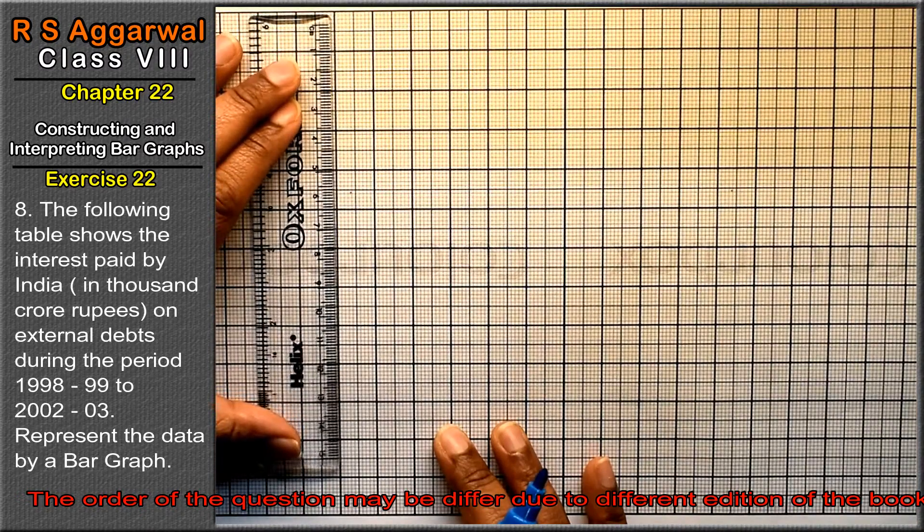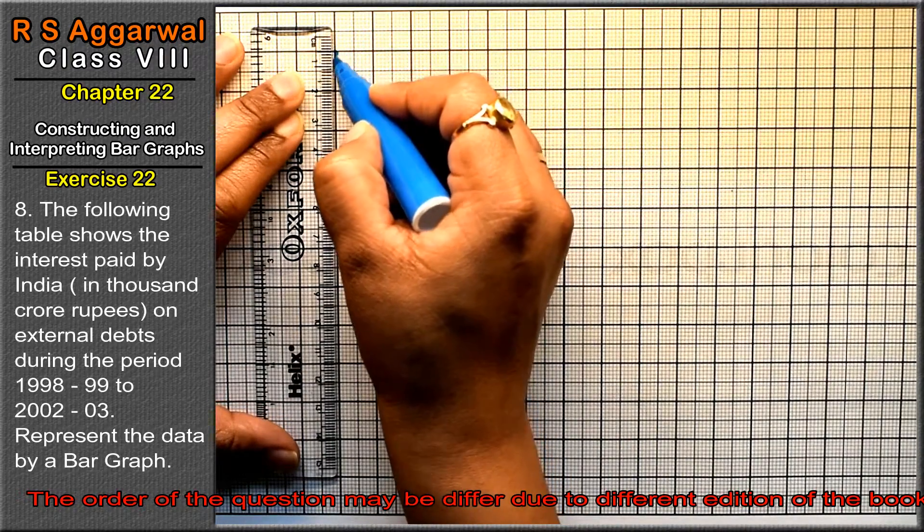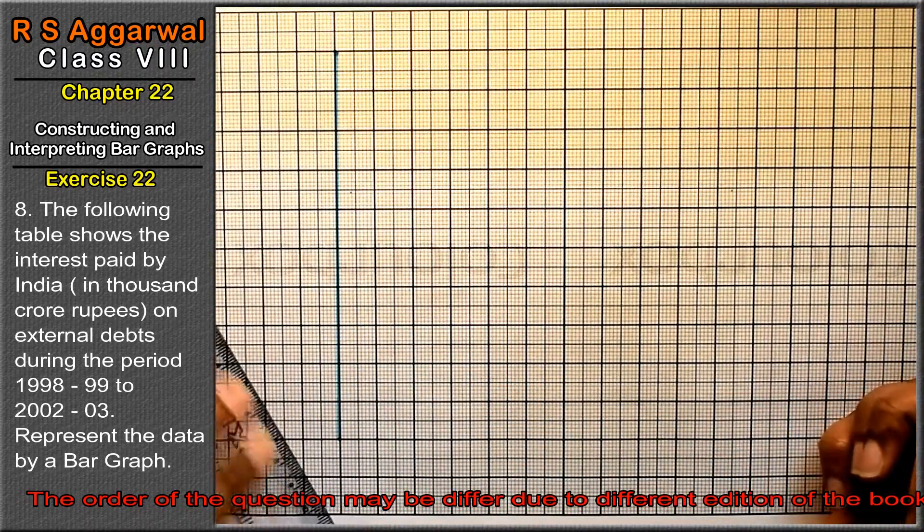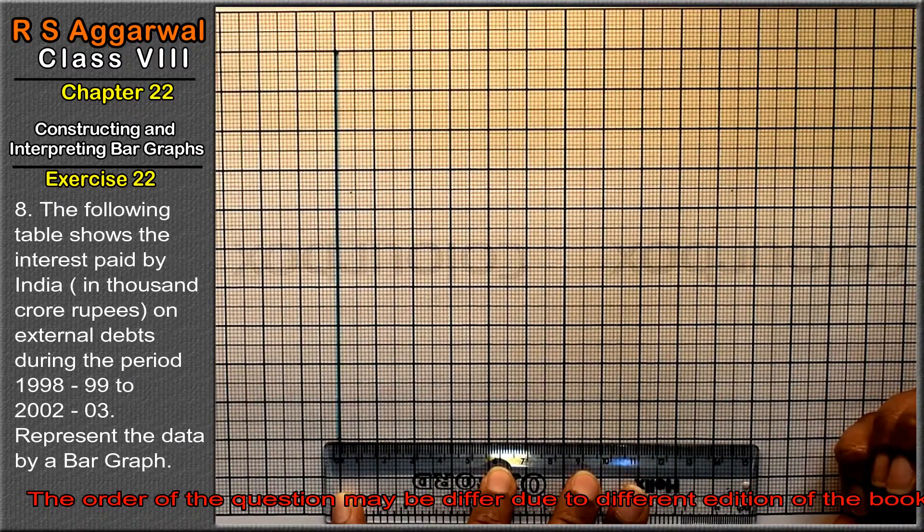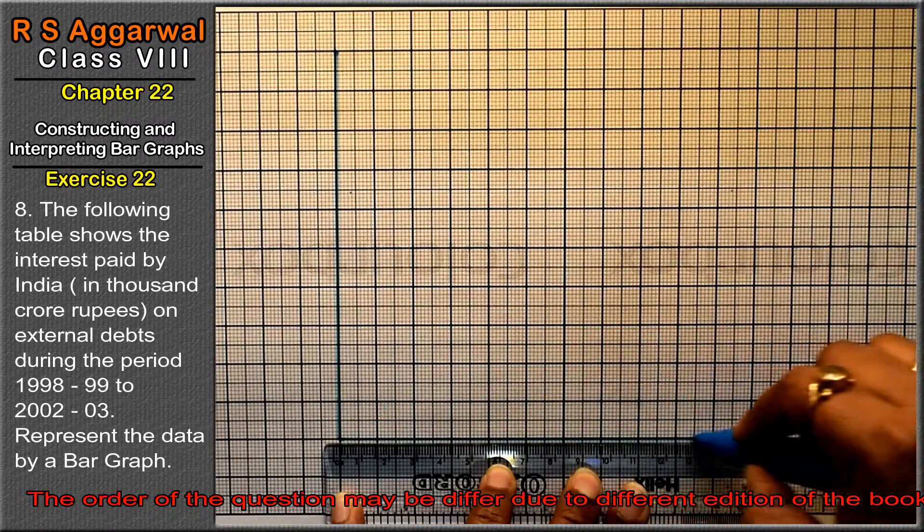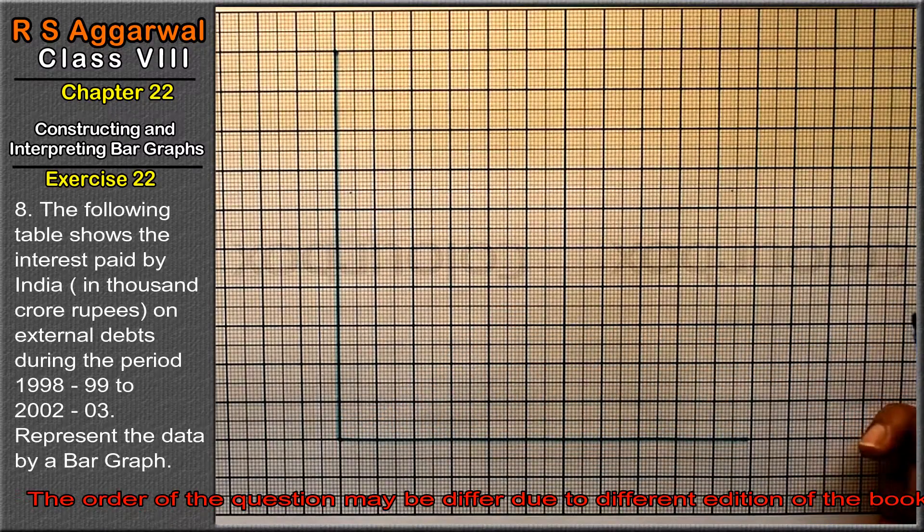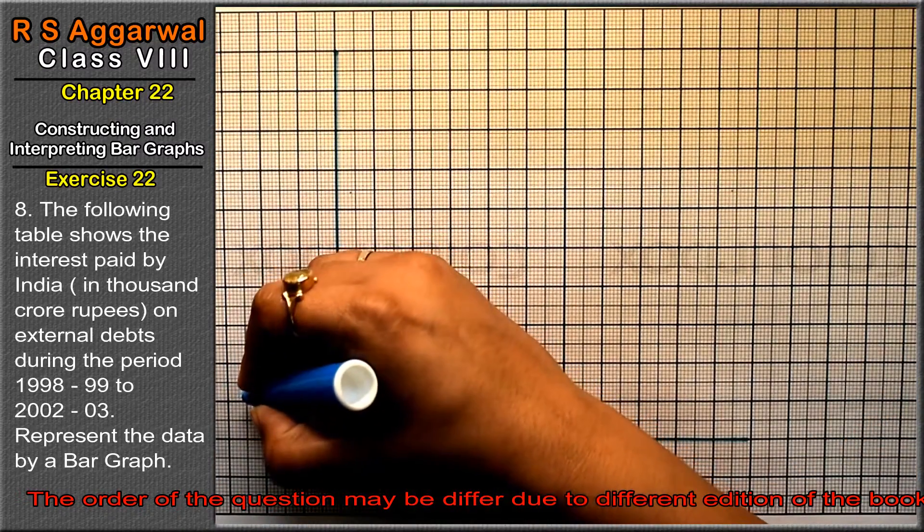We have the Y axis and the X axis. This is our zero point.